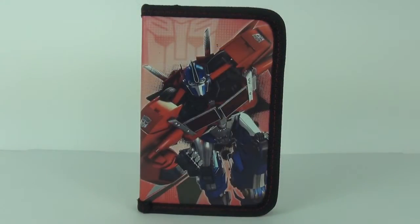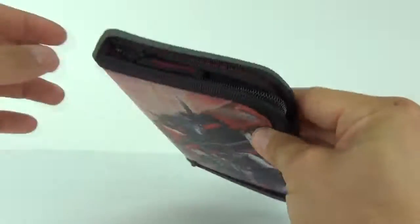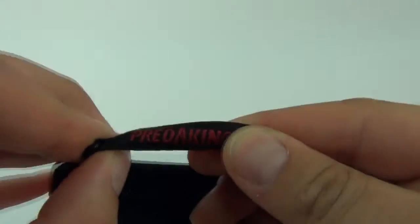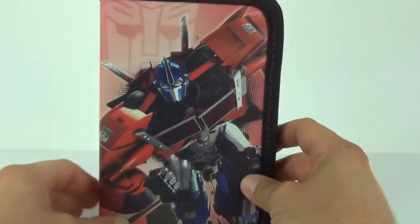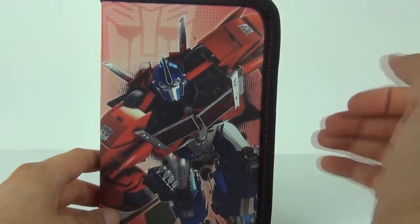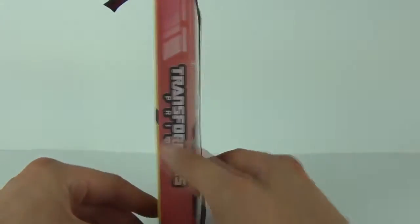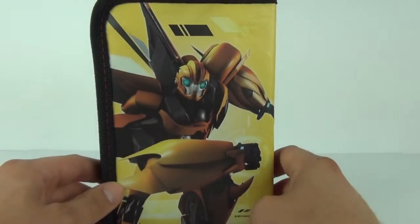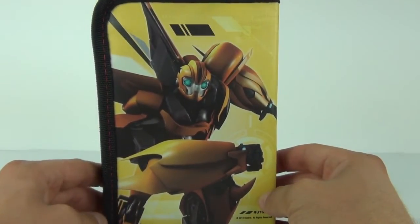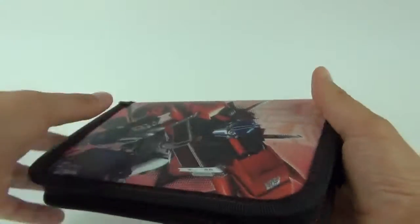Now this has a zip at the side with Predaking on the zip there, so how cool is that. We do have these really nice pictures on the outside, one of Optimus Prime and then Transformers Prime down the spine, and then everybody's favorite Bumblebee to the back of this pencil case.